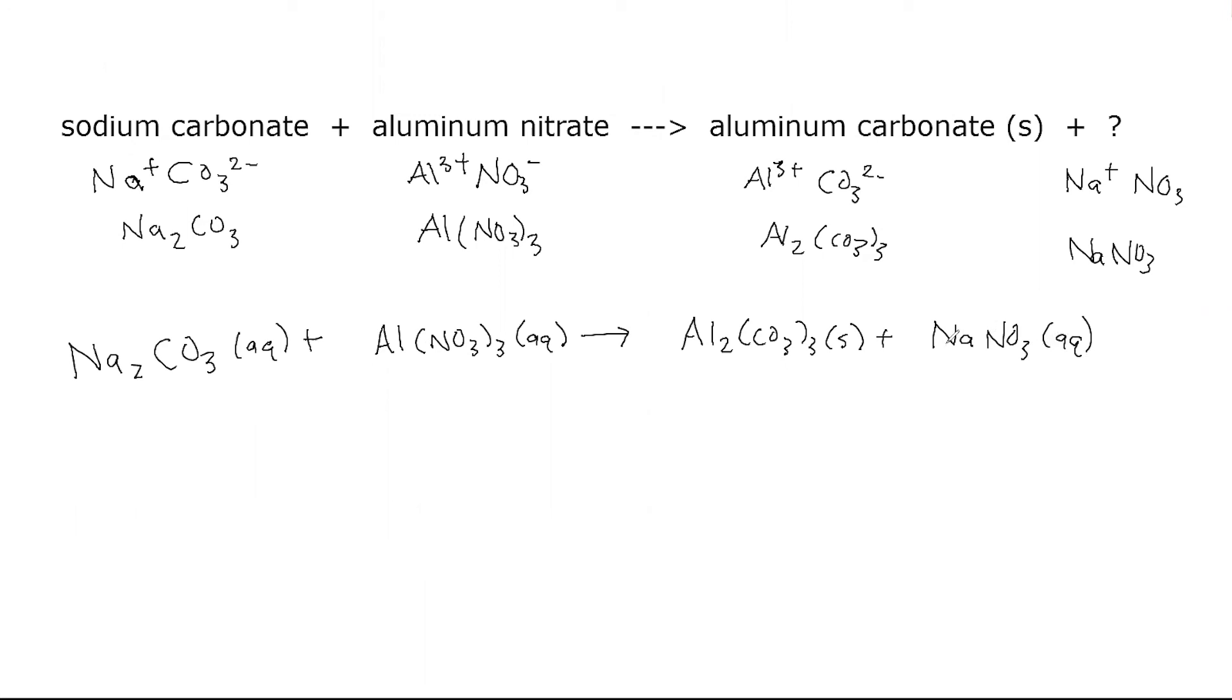Now we've got our chemical equation. All we have to do is balance it. Let's start with the Al atoms - we have two Al on the right side. Putting a 2 in front of Al(NO3)3 gives us two Al on the left, but that's six NO3 groups total. So we put a 6 in front of NaNO3. Now we need six Na atoms, so we put a 3 in front of Na2CO3. That gives us three CO3 groups on the left, and we already have three on the right. Let's double check: six Na on each side, three CO3 on each side, two Al on each side, and six NO3 on each side. We're balanced.